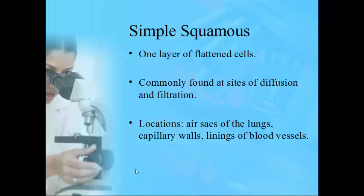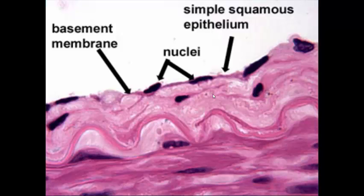Simple squamous tissue — simple meaning one layer, squamous meaning flattened cells — is found at areas of filtration or diffusion, like the air sacs of the lungs, blood vessels, and capillaries. On a real slide, you see one layer of cells that are very flattened — so flat that the nuclei have been squished down. It's epithelial tissue so it's exposed to an open space above.